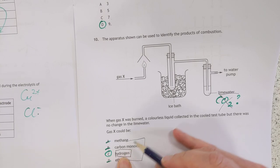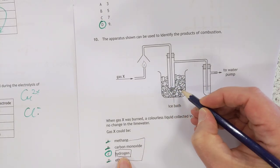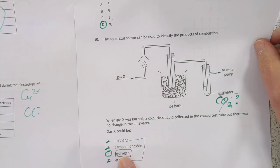And of course, if you burn hydrogen, you'll make hydrogen oxide, which is otherwise known as water, which is what's condensed. That's your colorless liquid there.